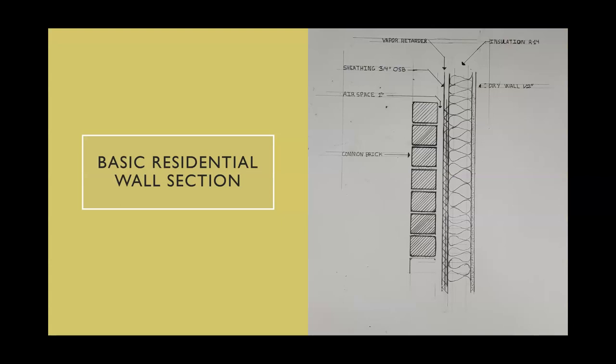This is a basic residential wall section, and this is what you're going to draw. Everyone is going to draw this just like I have here. The only thing I don't necessarily have are separate dimensions — my dimensions are mentioned inside the annotation. So: airspace one inch, sheathing three-quarter inch OSB — OSB stands for oriented strand board — then we have the vapor retarder, which has no measurement because it is paper thin, and the insulation, which also has no separate measurement because it is placed between the vertical framing members.